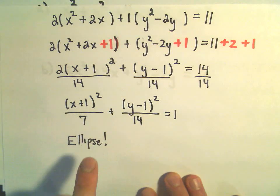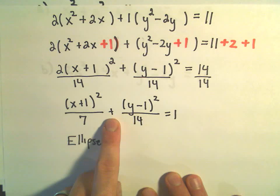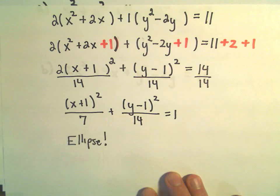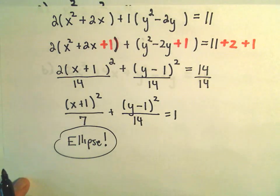Again, now we've got it in standard form. Remember, if we had ended up with a negative sign in between these, we would have a hyperbola instead of an ellipse. But since we have a positive in between, we know in this case that we're just going to have the graph of an ellipse if we were to graph it.